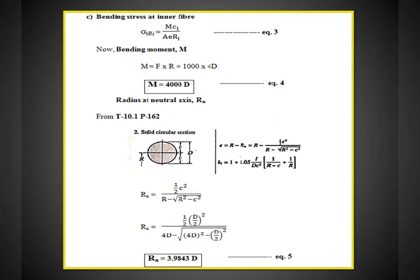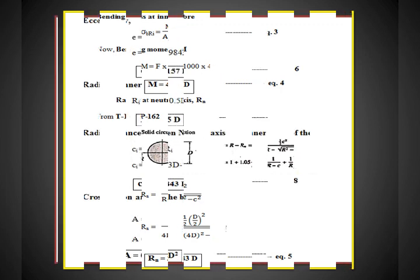We find radius at neutral axis Rn. Referring to Table 10.1, page 162 of Balvi Reddy and Mahadevan Design Data Handbook (4th edition), for a solid circular section: eccentricity e = R − Rn, where Rn = (c²/2) / (R − sqrt(R² − c²)). Here c = D/2. Substituting: Rn = (D/2)²/2 / (4D − sqrt((4D)² − (D/2)²)), which simplifies to Rn = 3.9843D — equation 5.